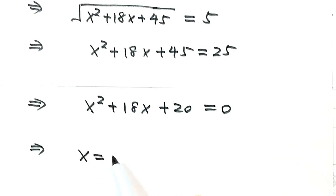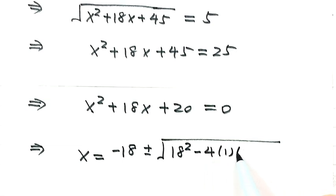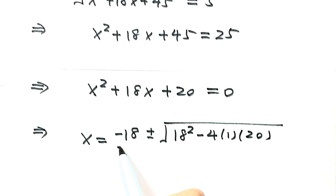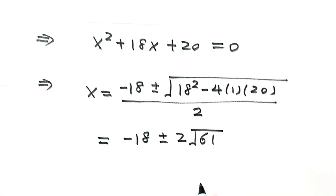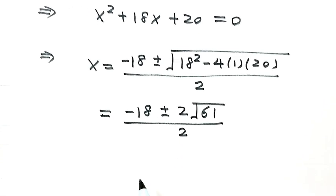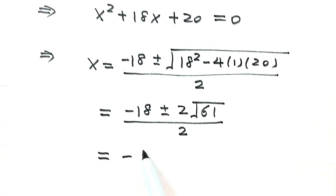Then x equals negative 18 plus or minus the square root of 18 squared minus 4 times 1 times 20, all divided by 2. Then simplify the part under the square root. Then we get 2 times the square root of 61 divided by 2, which equals negative 9 plus or minus the square root of 61.